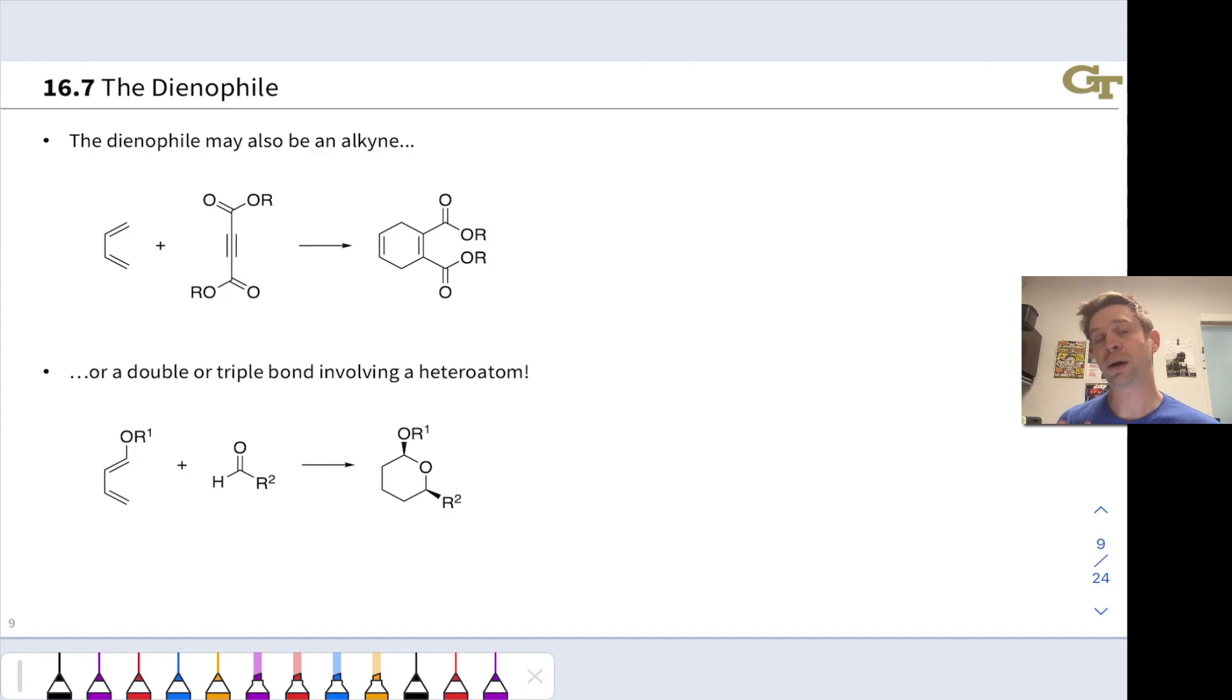This slide just shows us some other possibilities for the dienophile. It does not need to be a carbon-carbon double bond. It can be a carbon-carbon triple bond, part of an alkyne, and the electron flow is exactly analogous. The only difference, quite literally, is we've got an extra double bond right here.